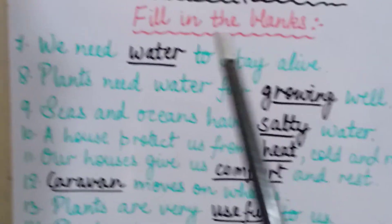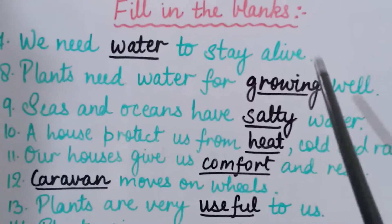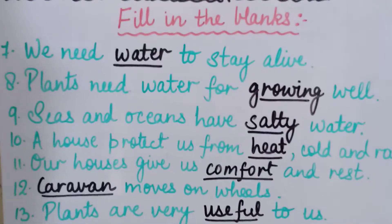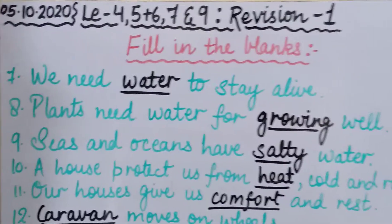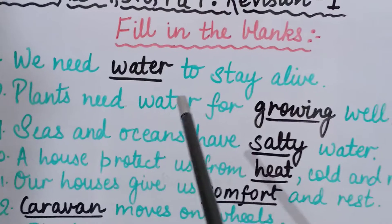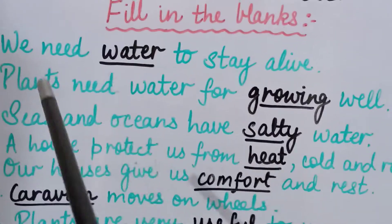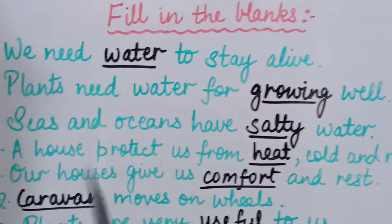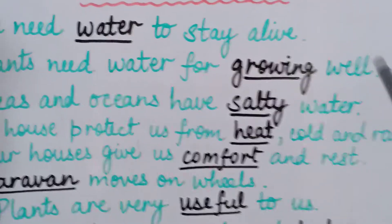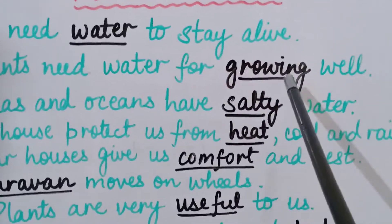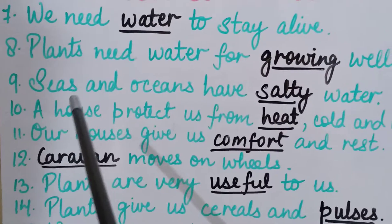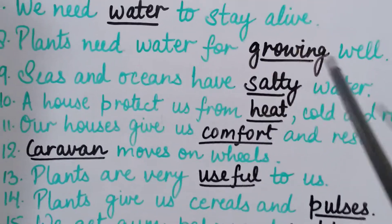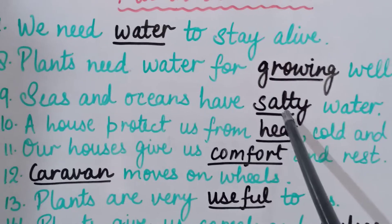Seventh sentence: We need W-A-T-E-R, water, to stay alive. Eighth sentence: Plants need water for G-R-O-W-I-N-G, growing, well. Ninth sentence: Seas and oceans have S-A-L-T-Y, salty, water — it is not used for drinking.